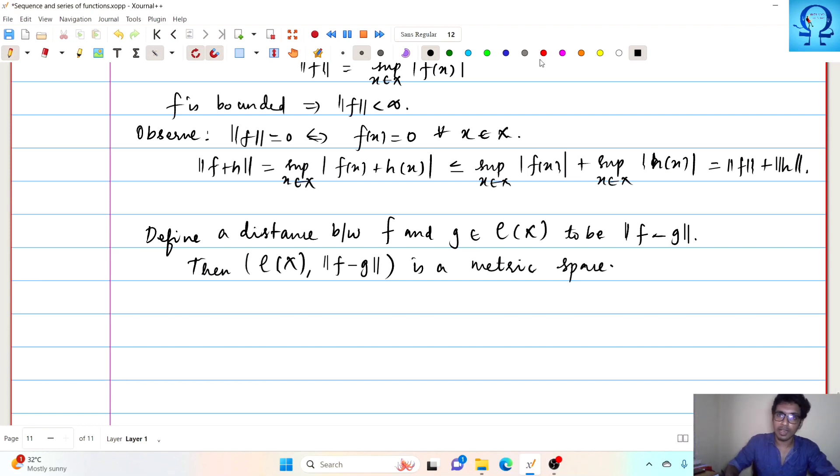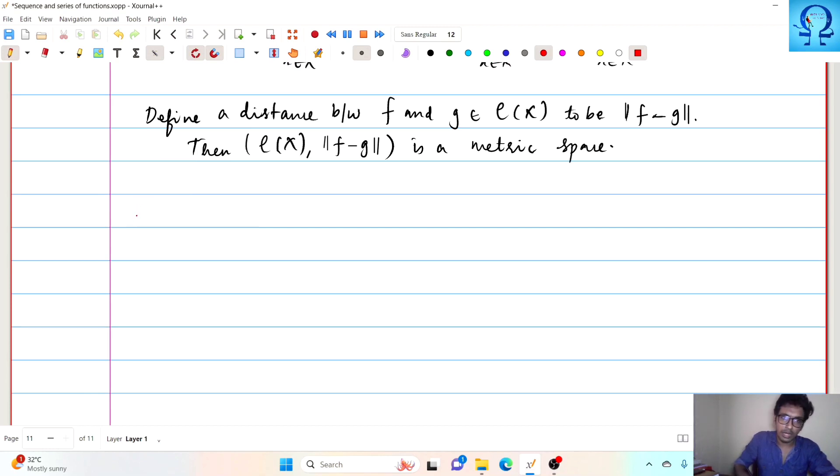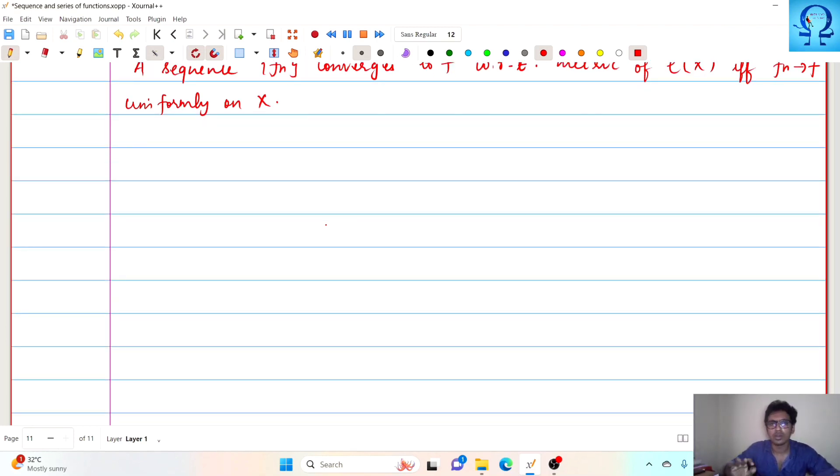Then our C of X with this distance function norm of f minus g is a metric space. So if we have to rephrase one of the theorems that we have discussed before, if f_n converges to f with respect to the metric of C of X if and only if f_n converges to f uniformly on X. So if the convergence has to happen with respect to the metric, then it should be uniformly convergent on X. So based on this we can very well call the closed subset of this C of X to be uniformly closed and the closure is uniformly closed and so on.